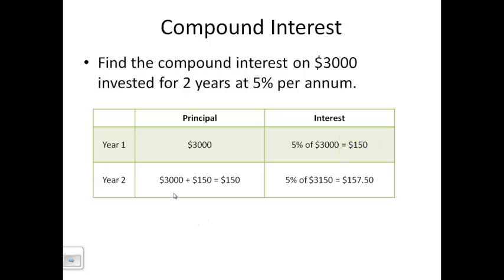Then my principal is going to increase by that $150. So I take 5% of $3,150, which gives me $157.50. So the compound interest in year 2 would be $157.50. The total interest earned is $307.50.